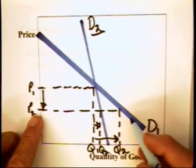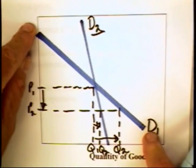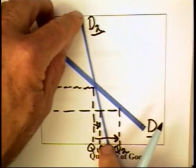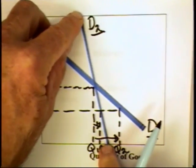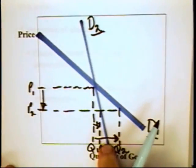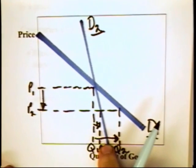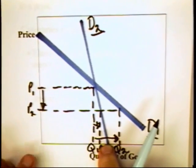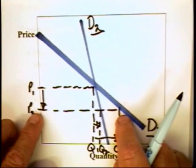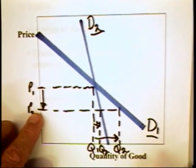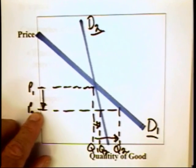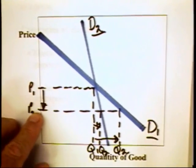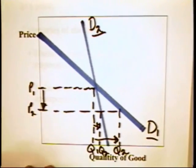Consumers are relatively more responsive with regards to this demand curve than this one. And these differences in responsiveness can have a significant influence on pricing decisions, primarily because the responsiveness of consumers can influence just how much revenues change, either up or down, when the price is lowered or when the price is raised.